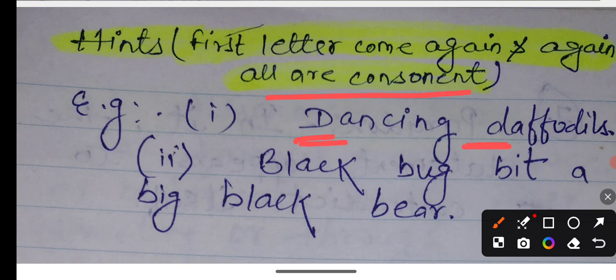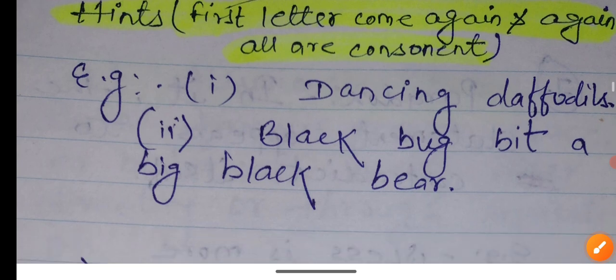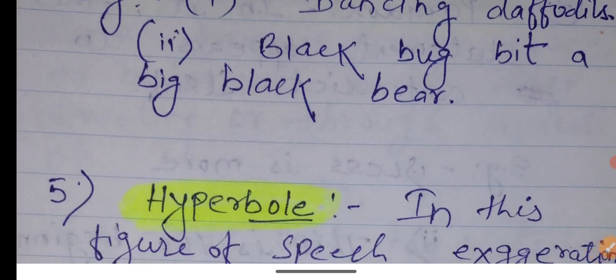Black, big, black bear. This is a tongue twister. So you can see what consonant words, that is alliteration. I hope you understand the examples.